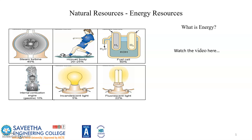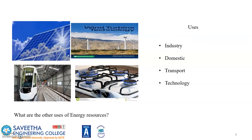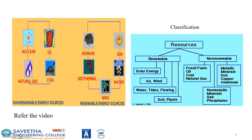Some video links related to energy have been provided. Energy is the capacity to do work. The first form of energy we get from coal, oil, and some other alternative energy sources. A discussion question is posed: what are the alternative sources of energy? The uses of energy include industrial purposes, domestic purposes, transport, and technology.